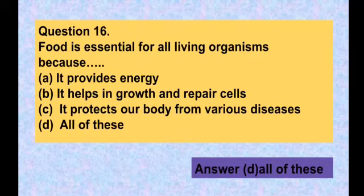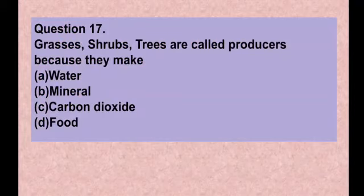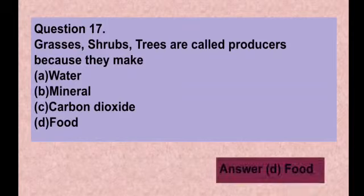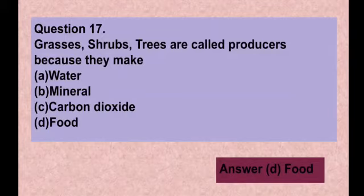Question number seventeen: Grasses, shrubs, and trees are called producers because they make — option A water, option B minerals, option C carbon dioxide, option D food. The correct answer is option D — food. Grasses, shrubs, and trees are called producers because they make food, while we are consumers because we consume food and depend on plants for it.